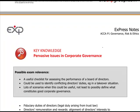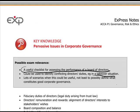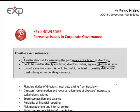Considering the exam relevance of what you've just been learning: the checklist from the last video is useful for assessing the performance of a board of directors, and the Mendelow Matrix is a useful checklist for assessing what directors should do and how they should operate. It could be used to identify conflicting directors' duties — for example, in a takeover scenario — to lay out where stakeholders are relative to your business. There are lots of scenarios where this could be useful, not least to define what constitutes good corporate governance.